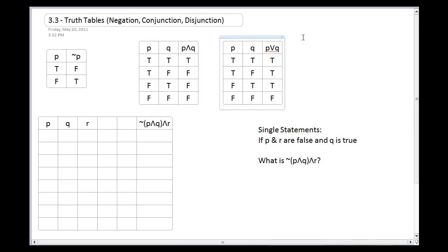For 'or' — which is what disjunction is — you can have left, right, or both be true. When both P and Q are true, the statement is true. When only P is true, that's still true. When only Q is true, the statement is still true. It's only when both sides are false that the disjunction statement becomes false.